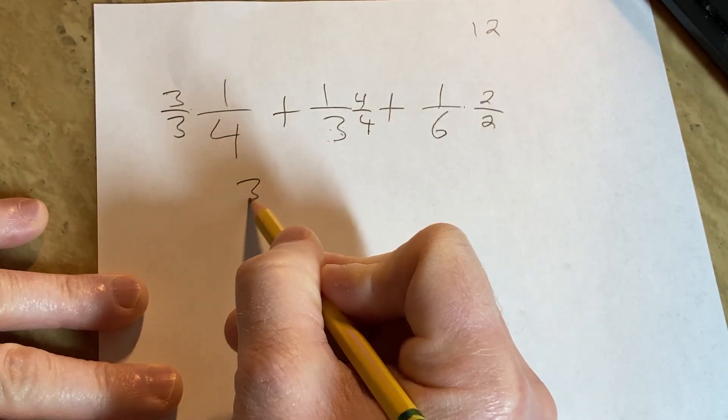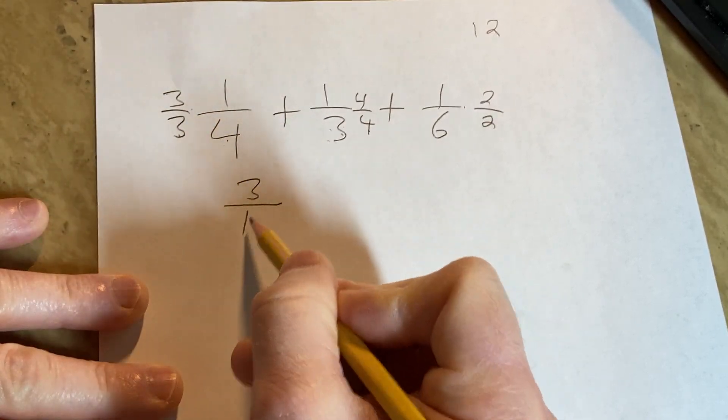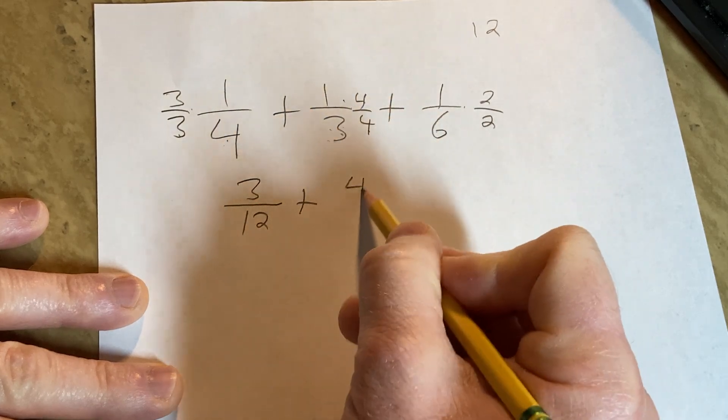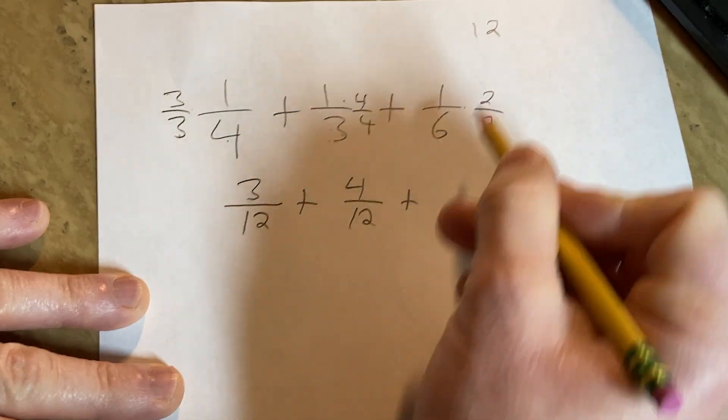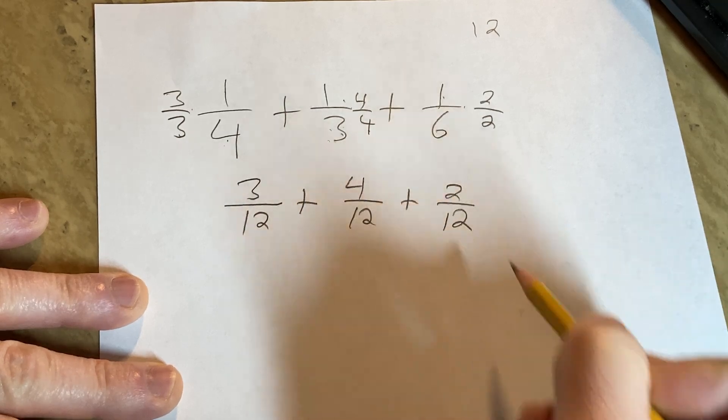3 times 1 is 3, 3 times 4 is 12, giving us 3 over 12. Then 4 over 12 and 2 over 12.